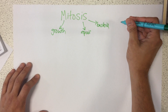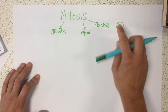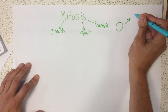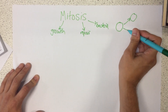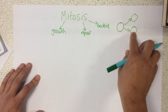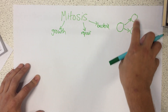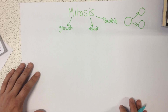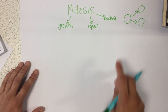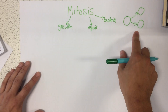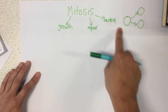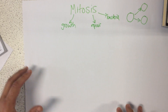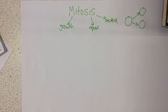The basic idea of mitosis is you start off with one cell and then it splits, and it gives you two identical daughter cells. What we're gonna do is discuss exactly how this happens, the different stages, and what is going on during mitosis.